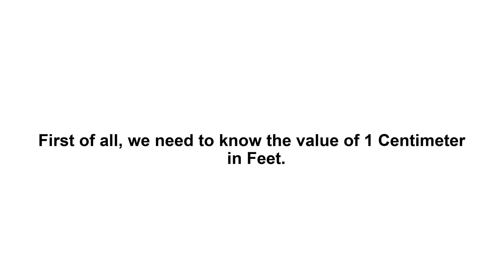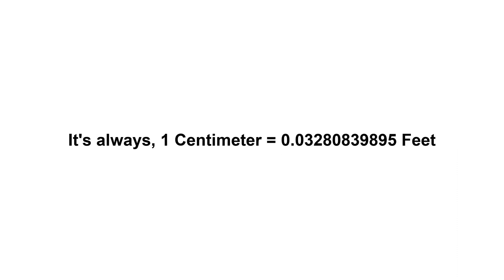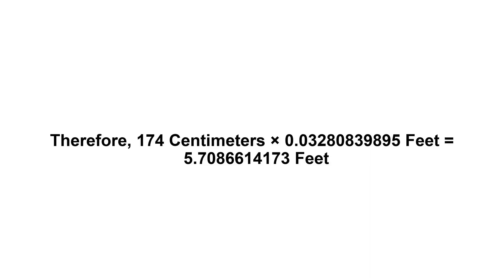174 centimeters in feet. First of all, we need to know the value of 1 centimeter in feet. 1 centimeter equals 0.03280839895 feet. Now we have to multiply 0.03280839895 by 174. Therefore, 174 centimeters times 0.03280839895 feet equals 5.7086614173 feet.